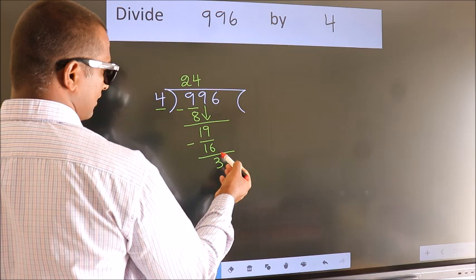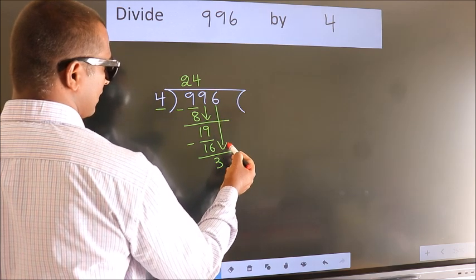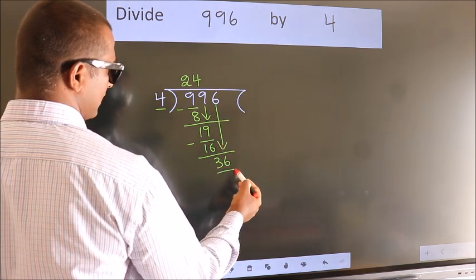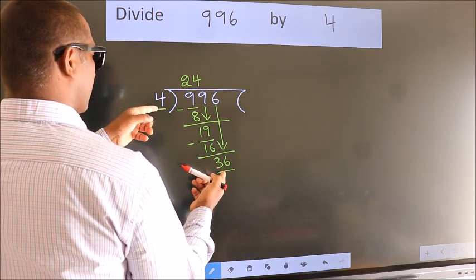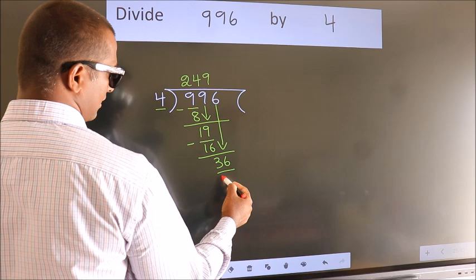After this, bring down the beside number. So 6 down. So 36. When do we get 36? In 4 table. Four nines, 36.